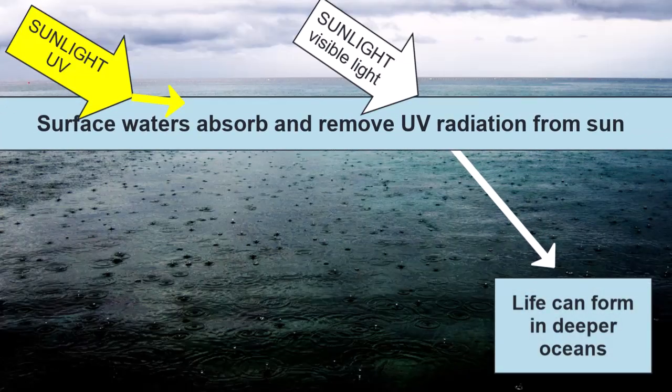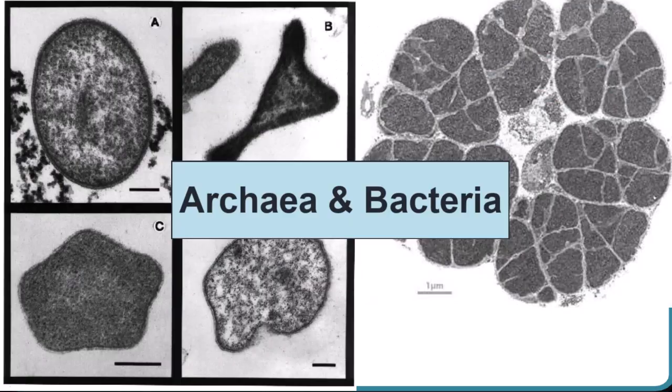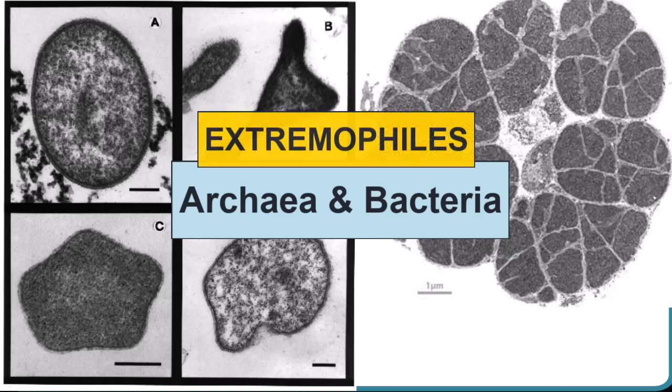What were these first organisms like? The very simplest single-celled bacteria, likely ones that could handle extreme conditions such as high heat and no light, also known as extremophiles.